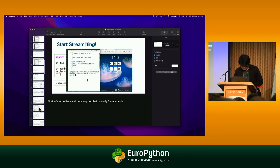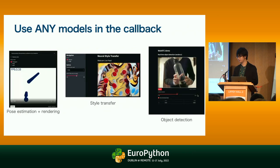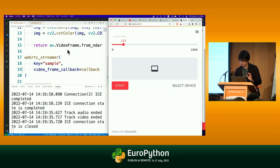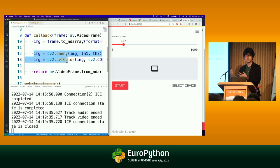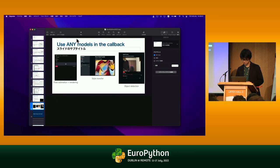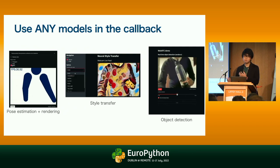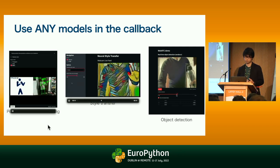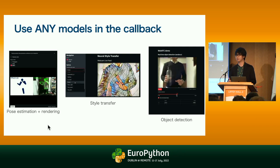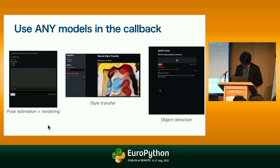Please note that you can use any model at the application backend — which means you can put any code inside this callback. You can replace this simple Canny filter with any model you like, no matter how simple or complicated it is. You have the flexibility to create any kind of web-based computer vision or machine learning application — for example, pose estimation with MediaPipe, or object detection with deep neural networks, and anything else you like.